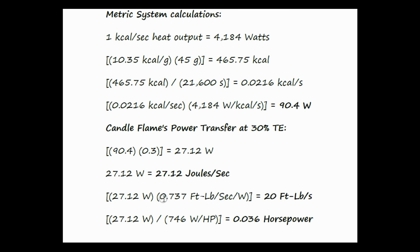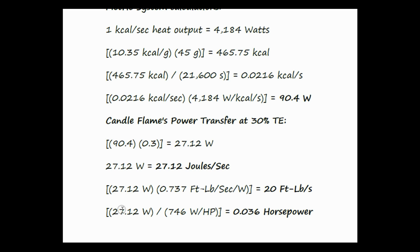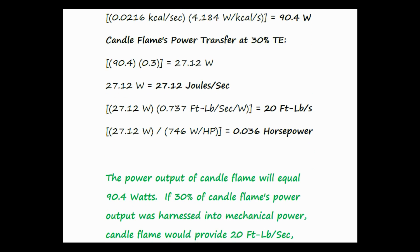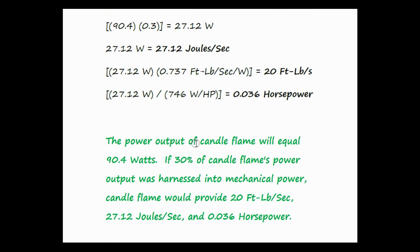27.12 watts times 0.737 foot-pounds per second per watt equals 20 foot-pounds per second of mechanical power harnessed at 30% thermal efficiency. 27.12 watts divided by 746 watts per horsepower equals 0.036 horsepower of mechanical power harnessed from the flame at 30% thermal efficiency. The final answers are: the power output of the candle flame equals 90.4 watts; at 30% thermal efficiency, the candle flame provides 20 foot-pounds per second, 27.12 joules per second, and 0.036 horsepower.